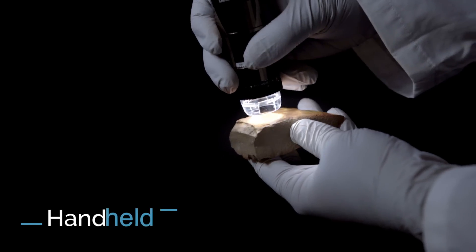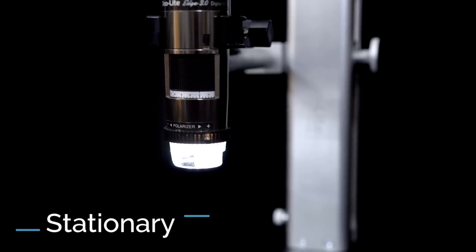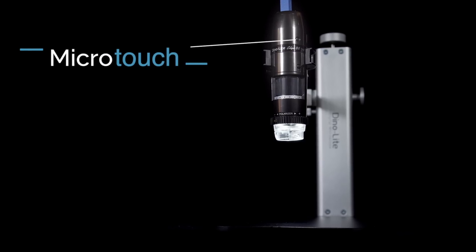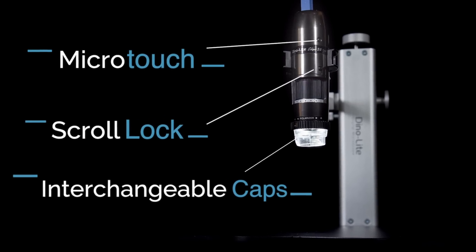The AM73915 is easy to use either handheld or with one of our many stands. Other features include a programmable micro-touch sensor, a scroll lock, and support for interchangeable end caps.